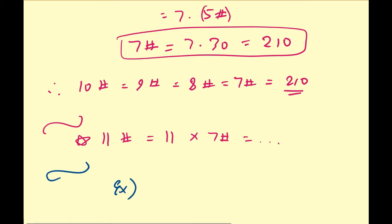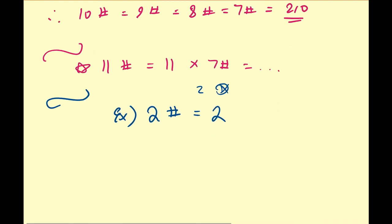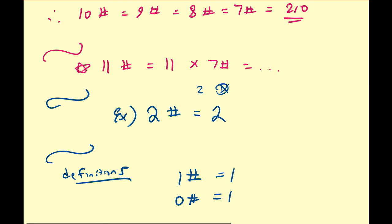At one extreme, 2 primorial: the only natural numbers less than or equal to 2 are 2 and 1, but 1 is not prime, so 2 primorial equals 2. Going further down, there are no primes below 2, so it isn't useful to go there. By convention, we assume that 1 primorial and 0 primorial both equal 1, just as 0 factorial equals 1 — defining these allows simple properties to be implemented.